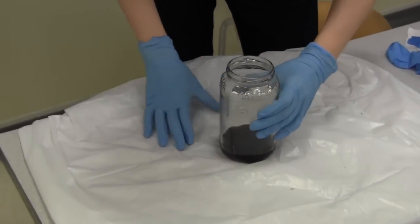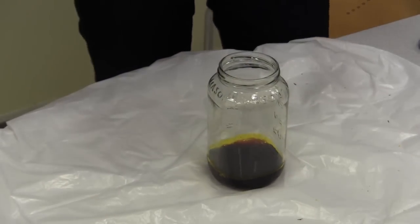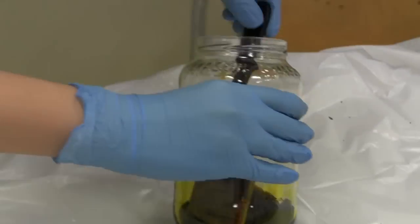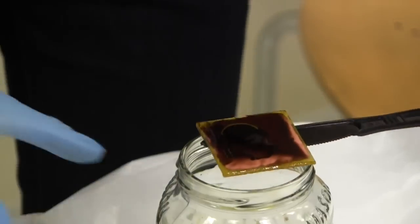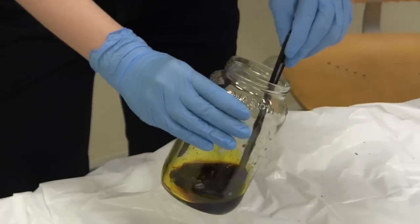The board needs to sit in the ferric chloride for 10 minutes or so, depending on how vigorously you stir it. If we pull it out halfway, we see that the copper towards the outside of the board has disappeared.